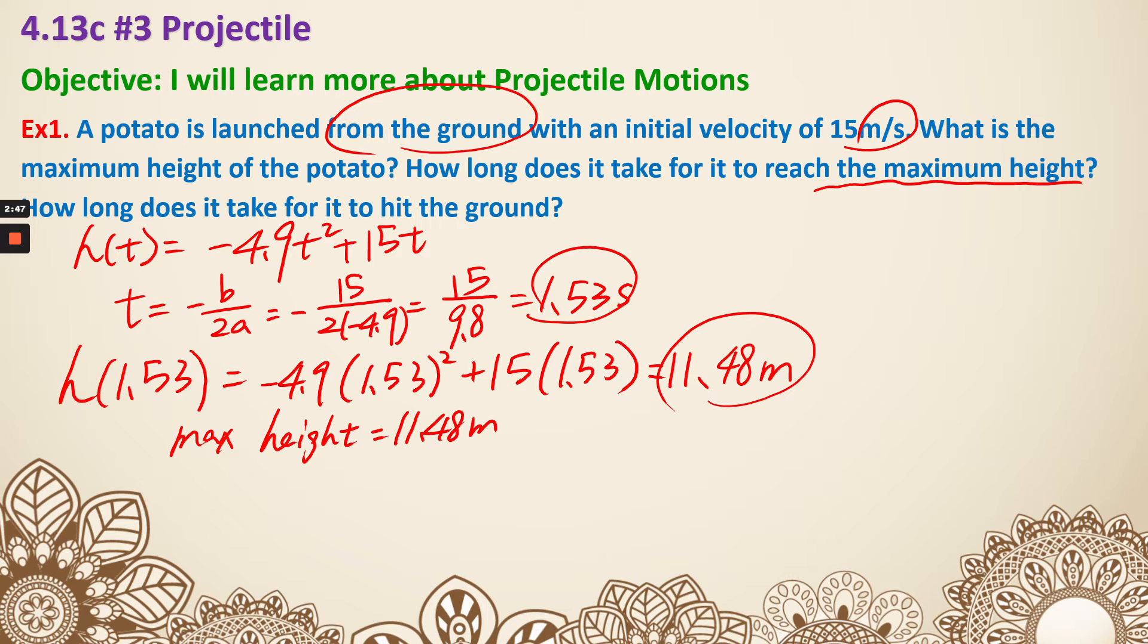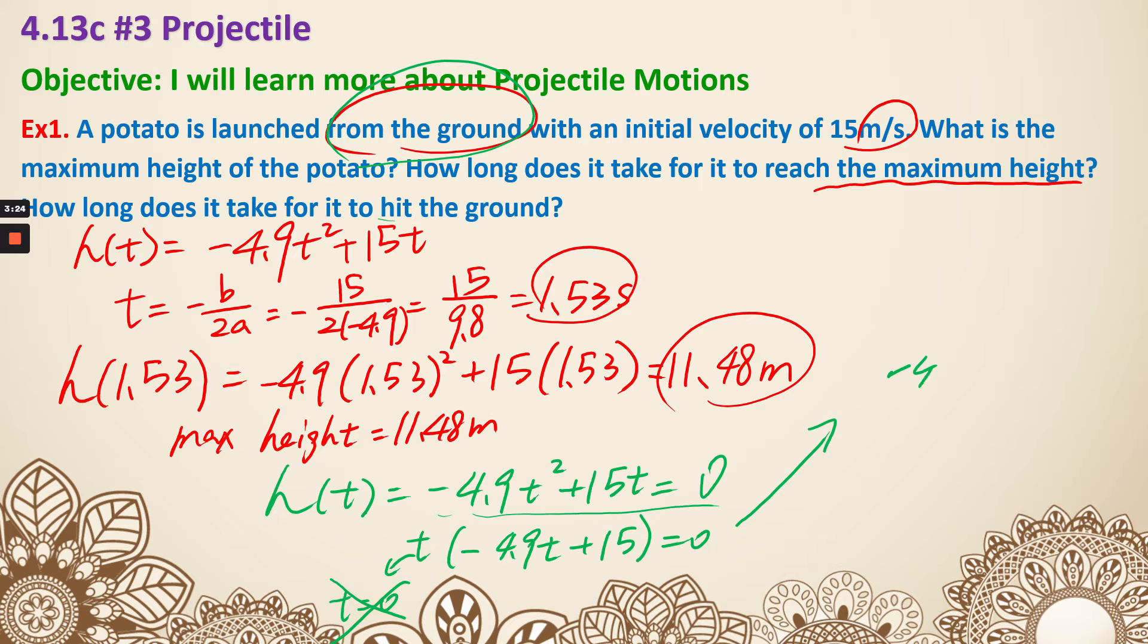Next part of the question is asking how long does it take for it to hit the ground? That means we are still going to use our h(t), so negative 4.9 t squared plus 15t, but we are trying to find out when the height is going to be 0, and that means it's hitting the ground. So we are solving for that to factor t out, then we have negative 4.9t plus 15 equals 0. This is going to give me t equals 0, which of course, it's launching from the ground. But that does not mean it's actually hitting the ground at that time, so I'm going to ignore that. Then I can solve for the negative 4.9t plus 15 equals 0. So t is going to be 15 over 4.9, which is going to be 3.06 seconds. That's example 1, which is a review for things we have learned before.